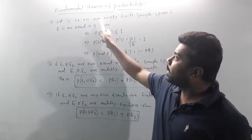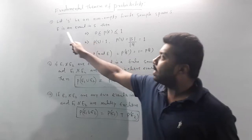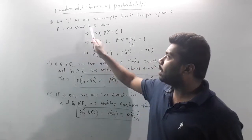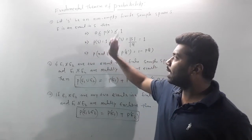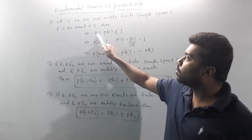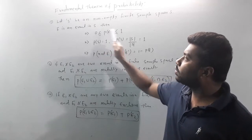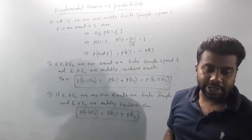Let S be a non-empty finite sample space S, and E is an event in S. Then P is equal to zero, so P of E lies between 0 and 1 among S.